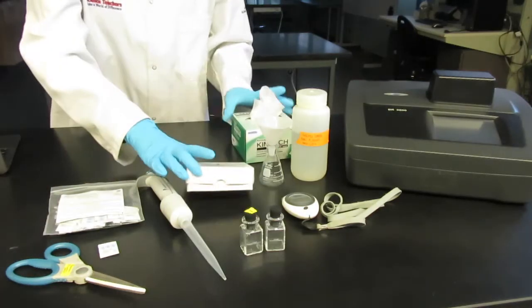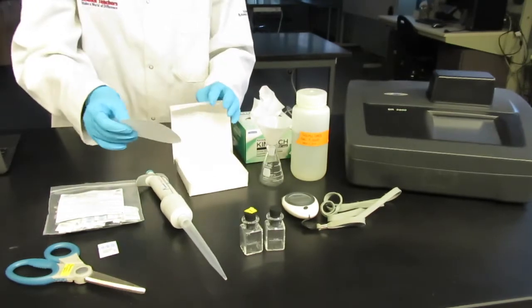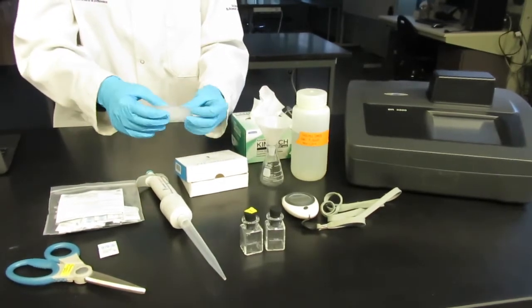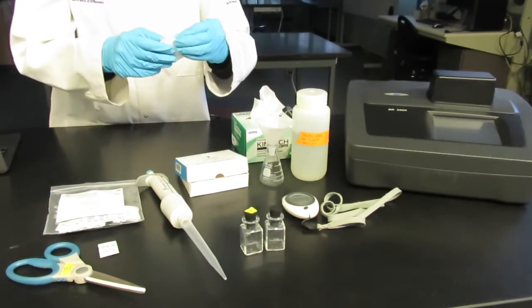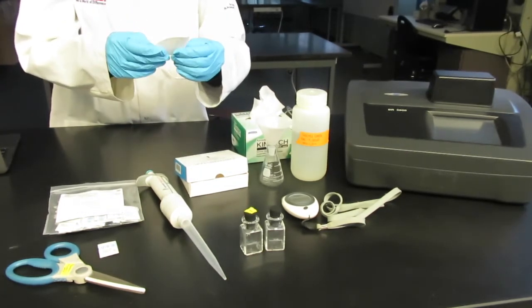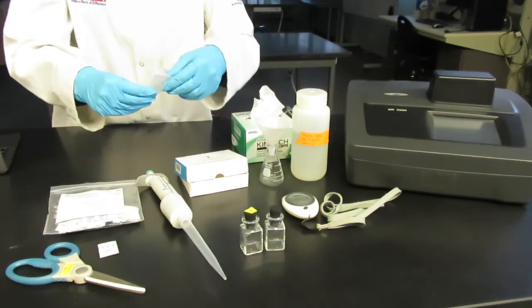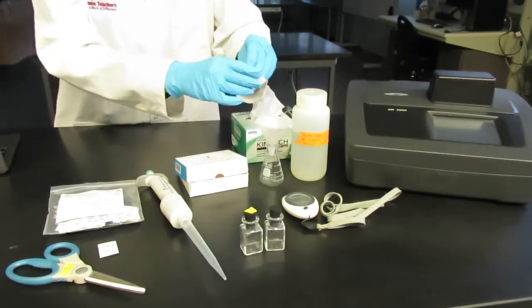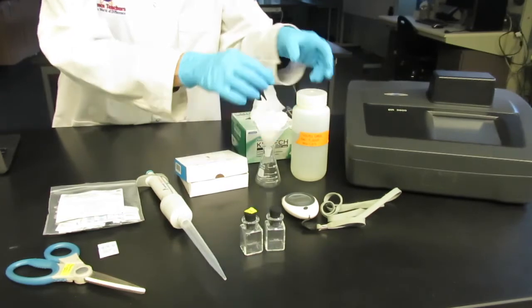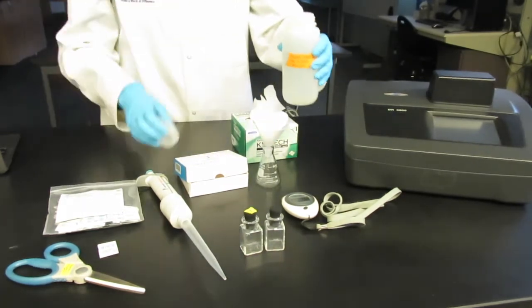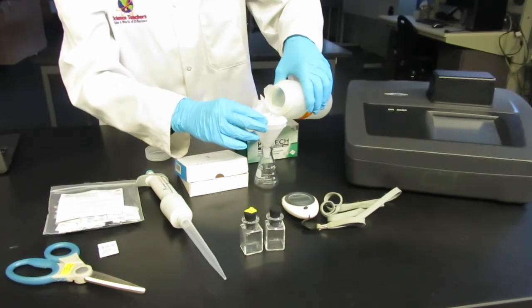The first step is to filter your water sample. Fold your filter paper in half then in half again. Place into the funnel then put the funnel on the graduated cylinder. Filter until you have about 30 milliliters of your water sample. It's always ideal to filter more than you need just in case dilution needs to happen or that there's a spill.